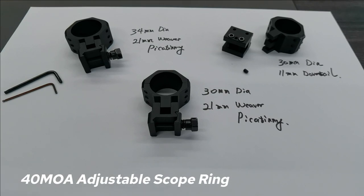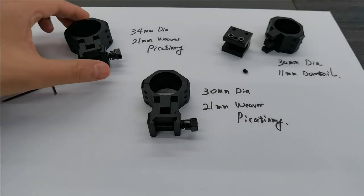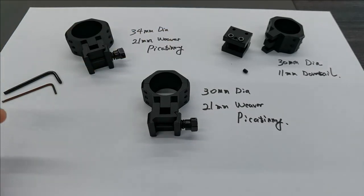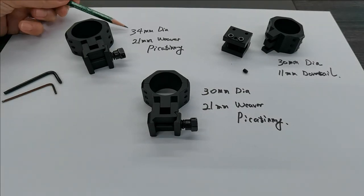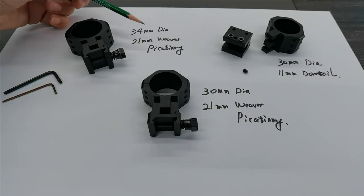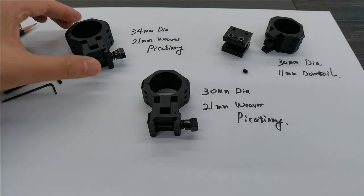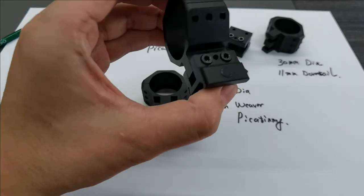Hi everyone, today I want to introduce our new product: elevation adjustable scope rings. We have three types in total. This one is the 34mm diameter with 12mm Picatinny or Weaver rail. That's 34 millimeters.